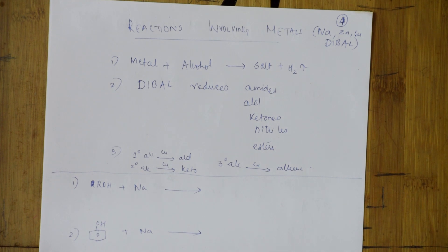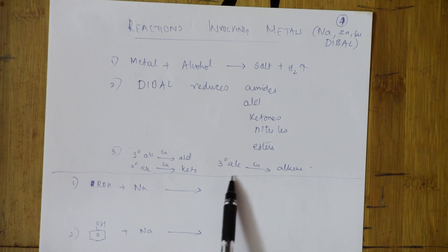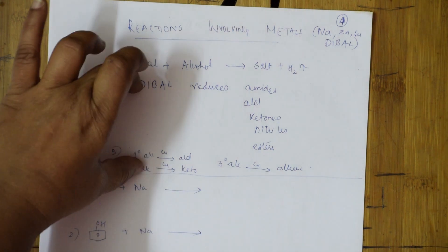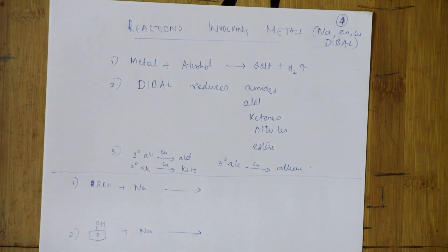Now, the first important thing to remember: primary alcohols in the presence of copper will form aldehydes; secondary alcohols in the presence of copper will form ketones; tertiary alcohols in the presence of copper will give alkenes. Memorize this table.